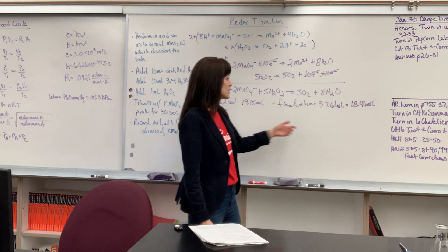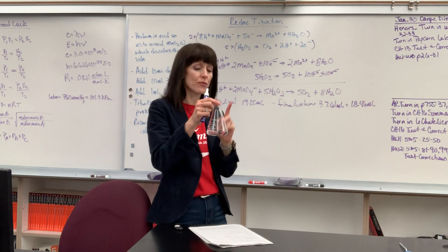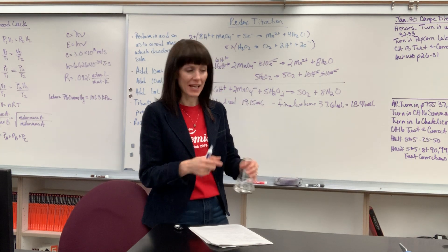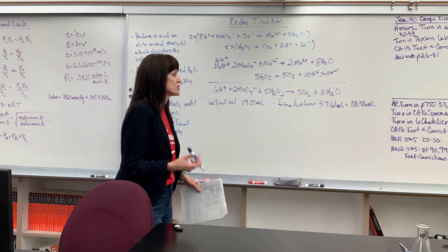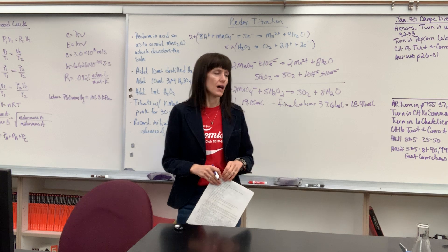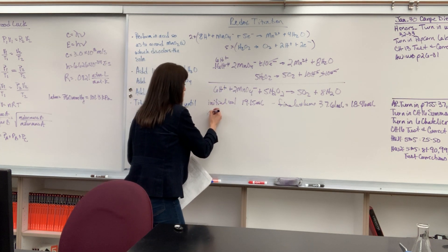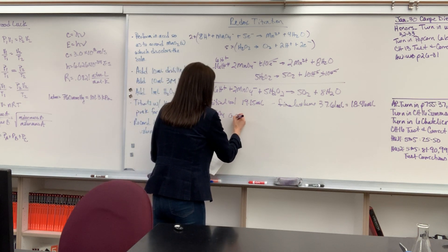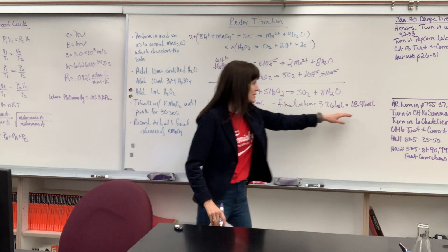So I subtract this, and I get that we've added a total volume of 18.46 mils of the permanganate into my hydrogen peroxide. Well, now we can do the math, and that's what you want to figure out, is how to find out a couple of things. I'm going to show you how to get a couple of data numbers from this. Now let's say that the molarity of our potassium permanganate was 0.0188 molar, and I just added this volume.